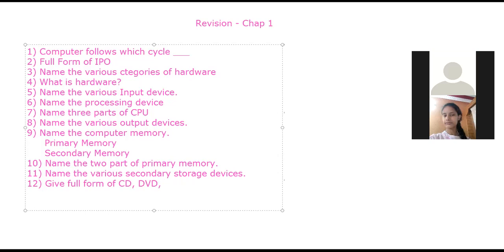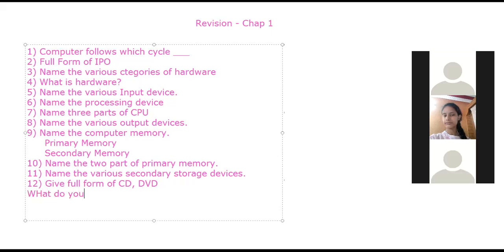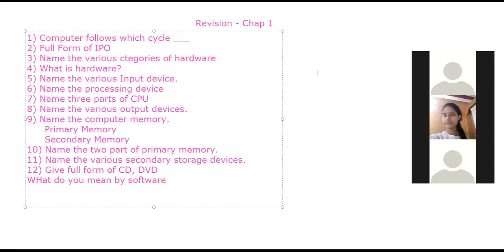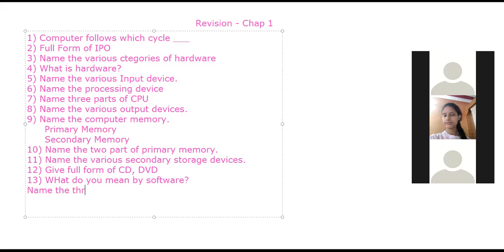DVD stands for Digital Versatile Disc — spelling of versatile: V-E-R-S-A-T-I-L-E. What do you mean by software? Software is a set of programs that give instructions to the computer to do a particular task. Name the three types of software.